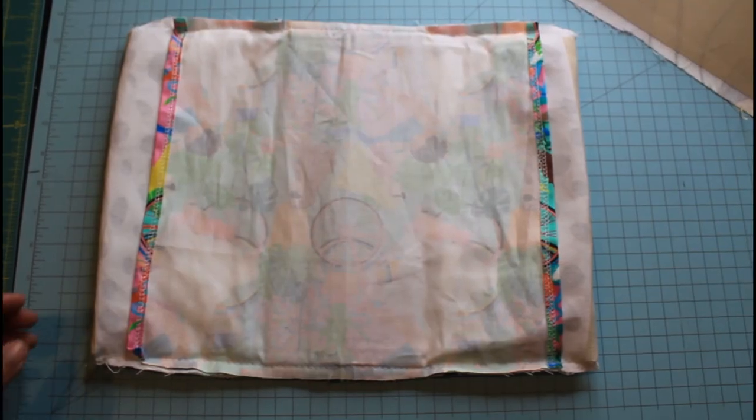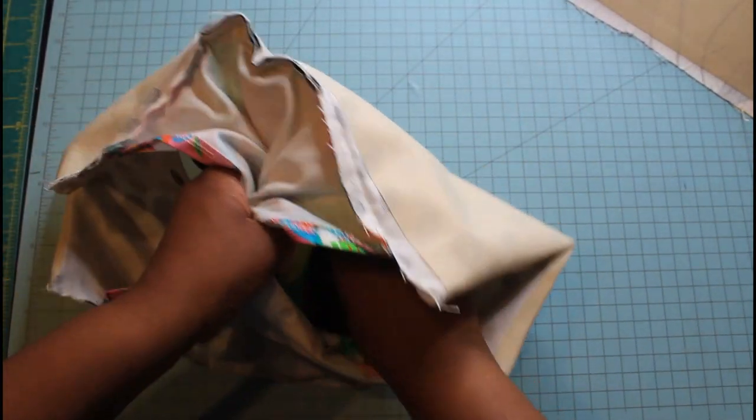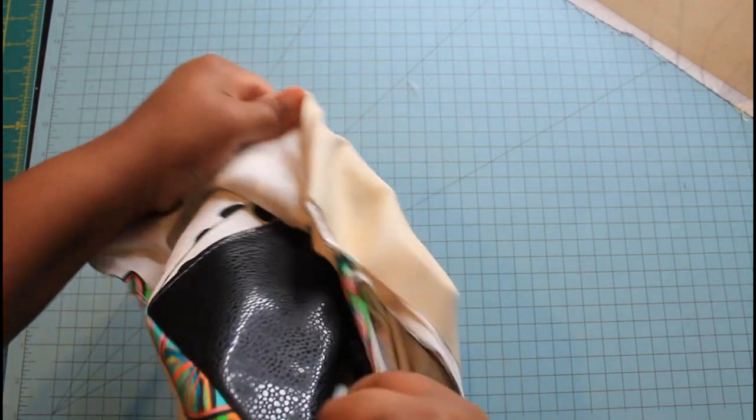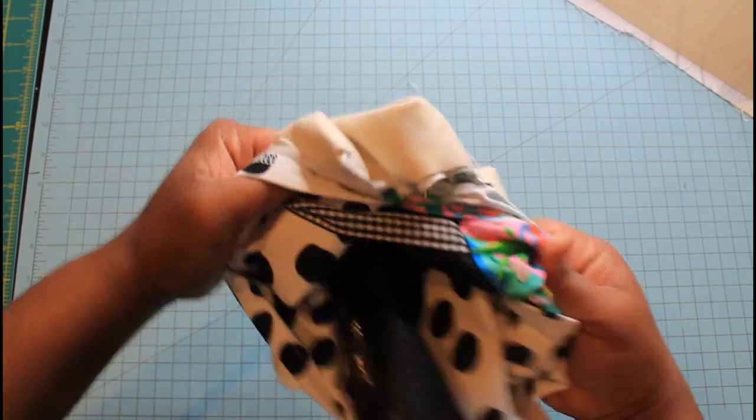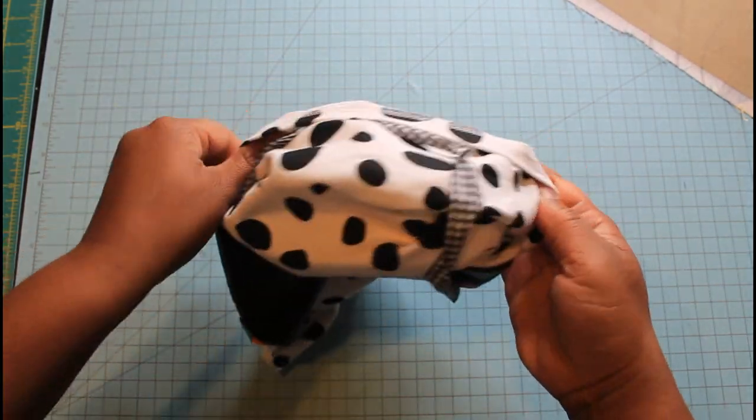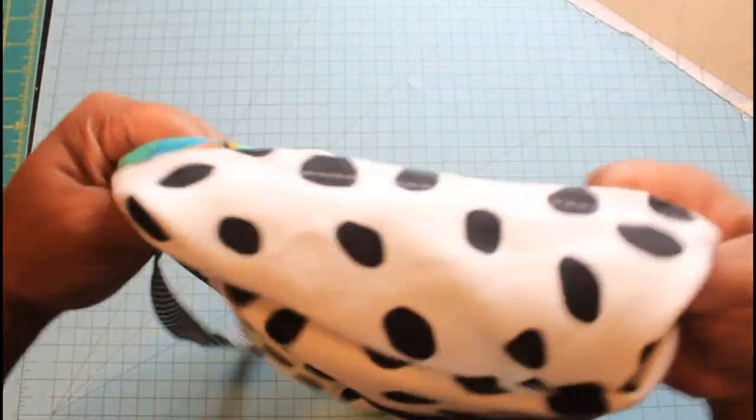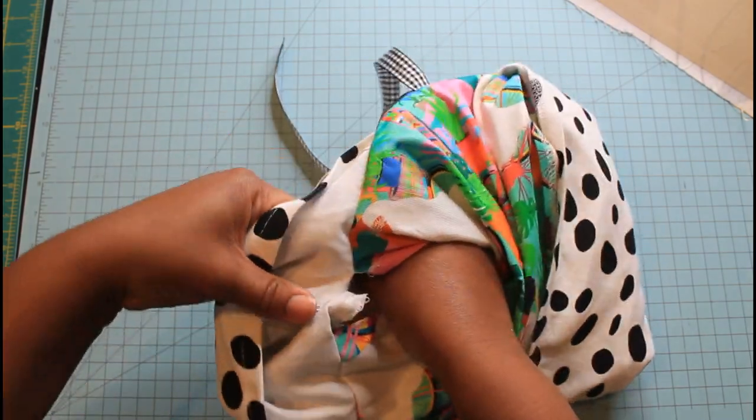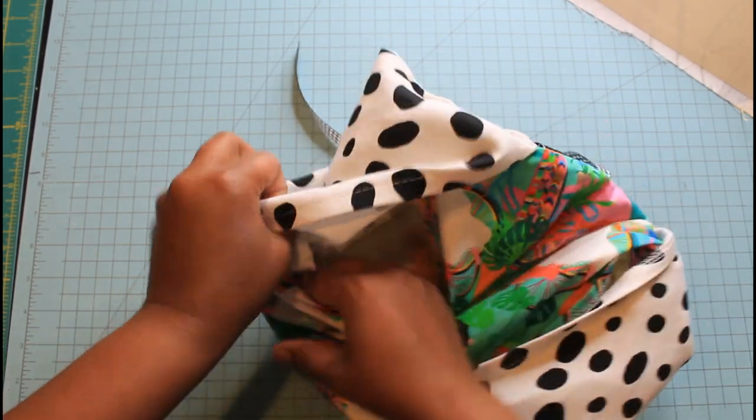Alright guys so we are on our final step, well final step if you choose not to iron it down or press it a bit, but final step for this video tutorial. We are going to go ahead and turn our book cover right sides out so you just basically want to push this through. And then what you're going to notice here is that I am going to go ahead and take a little paint stick or paint brush that I have that I use to poke corners out, and you just want to get in there and just poke those corners out and make sure that everything's turned out correctly and that it looks good and clean and finished.